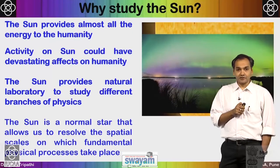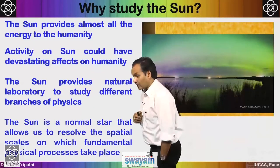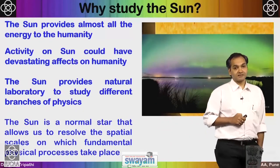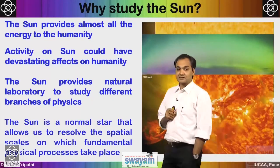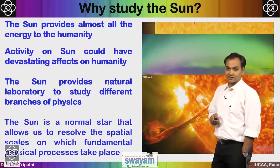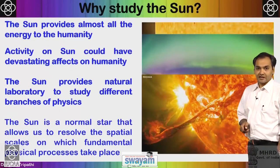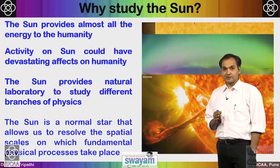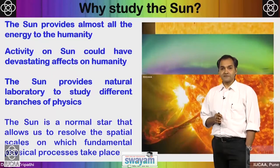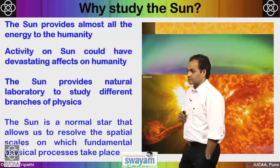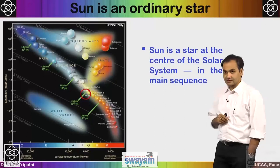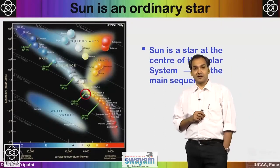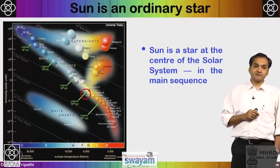The sun is a normal star which can be resolved very well because it is so nearby. You can use a telescope to look at scales at which physical processes are taking place. Here is an example from the Solar Dynamics Observatory showing fundamental-scale fine threads of structures where many physical processes in the sun's atmosphere occur. The sun is special because it is close by, but it is also an ordinary star among all stars in the Milky Way.